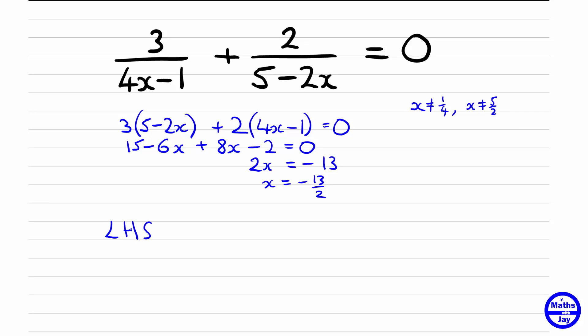So the left-hand side substituting that value of x in is going to be equal to 3 over 4 times minus 13 over 2, so that's going to be minus 26 minus 1, and then substituting into the other fraction 5 minus minus, so that's going to be a plus, and that's going to be plus 13. So we have got minus 3 over 27 plus 2 over 18, so that's minus a ninth plus a ninth, and that is equal to zero, so x is correct.